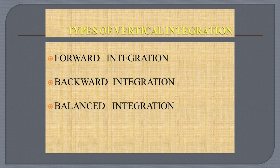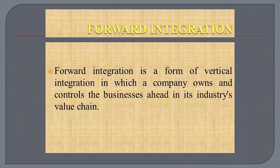What are the types of vertical integration? The types of vertical integration are categorized into three points: forward integration, backward integration, and balanced integration. Forward integration is a form of vertical integration in which a company owns and controls the businesses ahead in its industry's value chain. For example, retail venues — when the product is available directly to the customers it is known as forward integration, like Myntra. Myntra, an e-commerce startup, launches its own logistics services to serve customers on time.